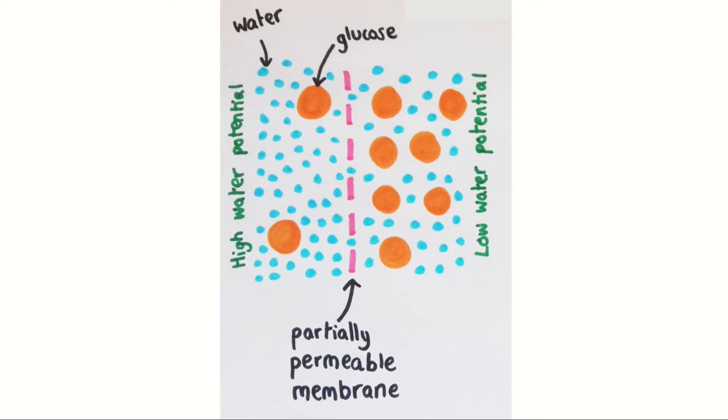But what do we mean by a partially permeable membrane? This is a membrane barrier which allows water to pass through it, but not the solute. Here, the blue water molecules can get through the gaps in the membrane, but the dissolved orange glucose molecules are too large.